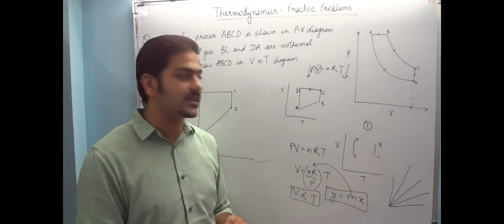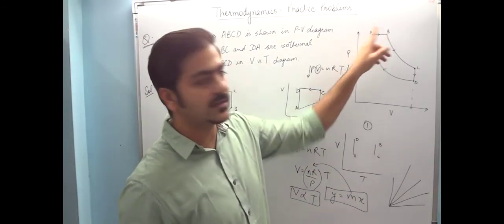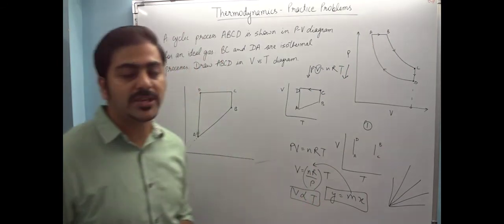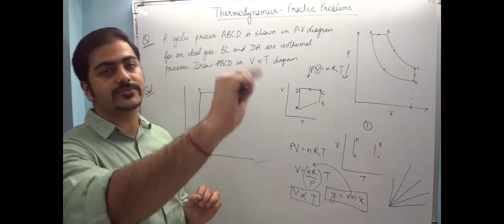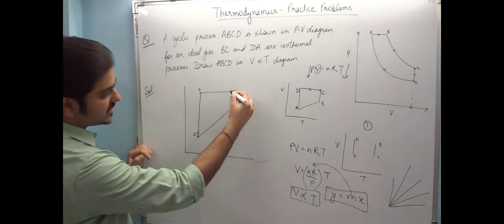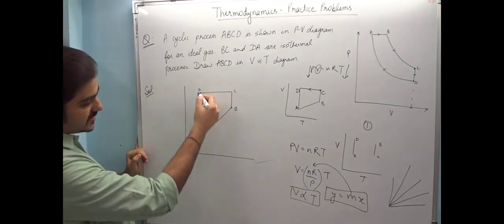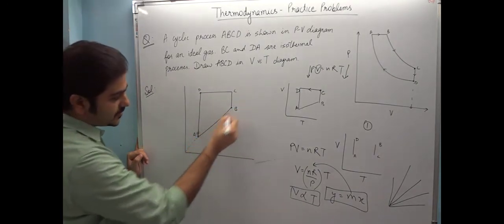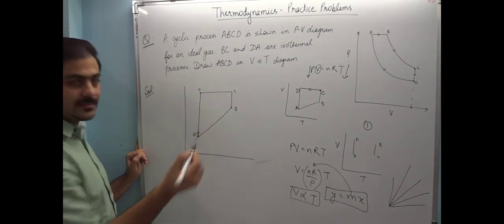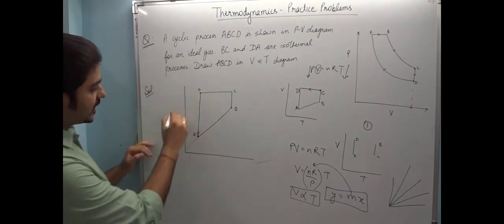But ultimately I have to know that when I go from A to B, I have to know this is a straight line. So from C to B, D to A, so from A to B that will pass through the origin. So this is our curve, volume versus temperature curve for ABCD.